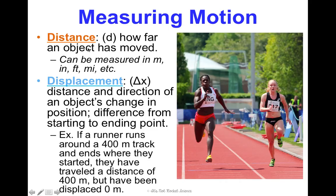Consider these runners. Let's say they run around a 400 meter track and end where they started. They traveled a distance of 400 meters. That is how far they moved. But they have been displaced 0 meters from where they started. They started and ended at the same spot. So there's no difference from where they started or ended. So again, their displacement would be 0.